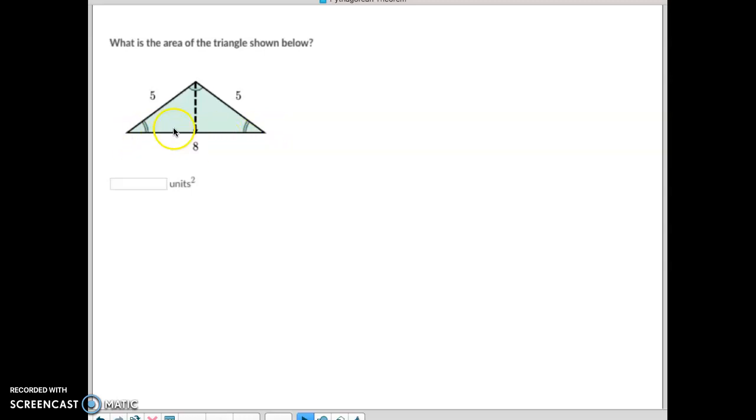If the length of this whole edge all the way across is 8, and this line comes down in the middle, then we know that this line right here is a length of 4. So again, we can do the c squared minus a squared. We've got 5 for the long edge, 4 for the short edge. 5 squared is 25, 4 squared is 16. 25 minus 16 is 9. And the square root of 9 is 3. So we know that the height of this is 3.